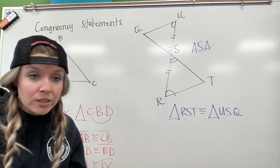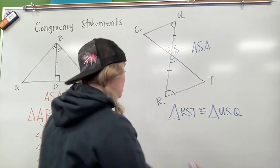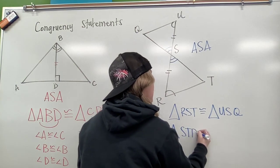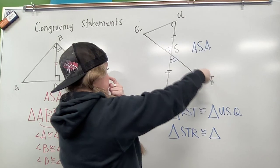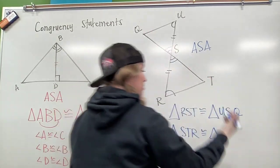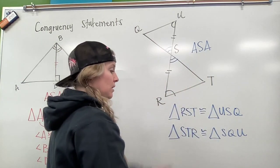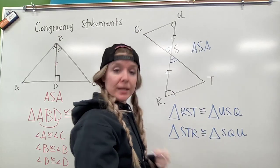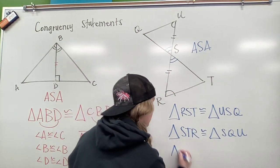Like I said, order doesn't matter on the first one as long as it matches the second. So I could also say triangle STR is congruent to triangle - so if I go S to T, I've got to go S to Q. So S-Q-U. That's telling me which pieces are congruent. Corresponding parts have to be in the same position.